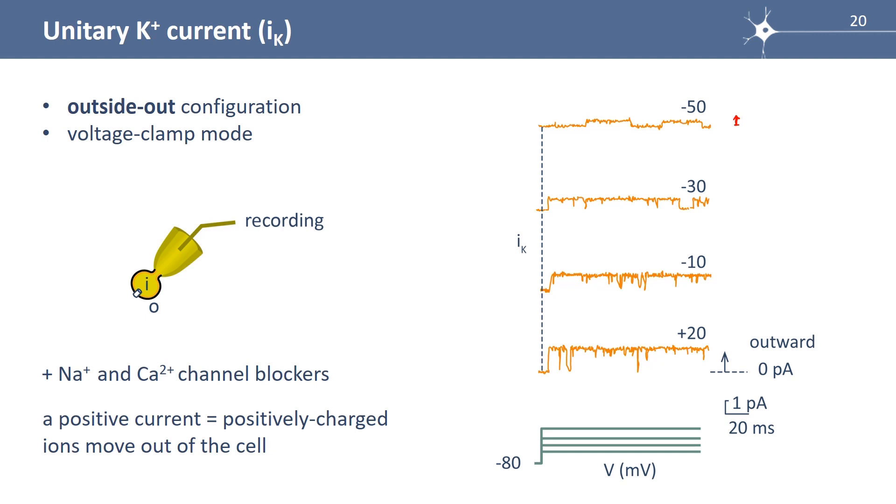At minus 30 millivolt, you see here the outward current. Here, and again here. At minus 10, you have an outward current during the whole depolarization with some closing appearing in the middle. And the same for plus 20, the current is larger.